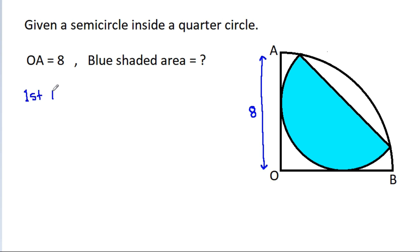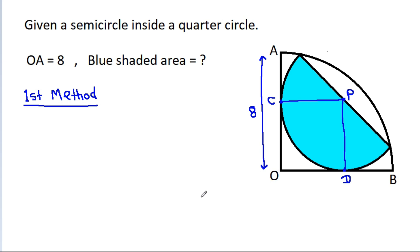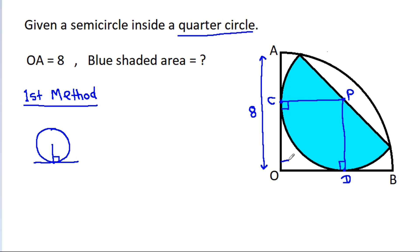First method. Suppose the center of the semicircle is P, this point is C, and this point is D. In any circle, the radius and tangent are perpendicular to each other, so these angles will be 90 degrees. AOB is a quarter circle, so this angle will also be 90 degrees. Suppose the radius of the semicircle is equal to R.